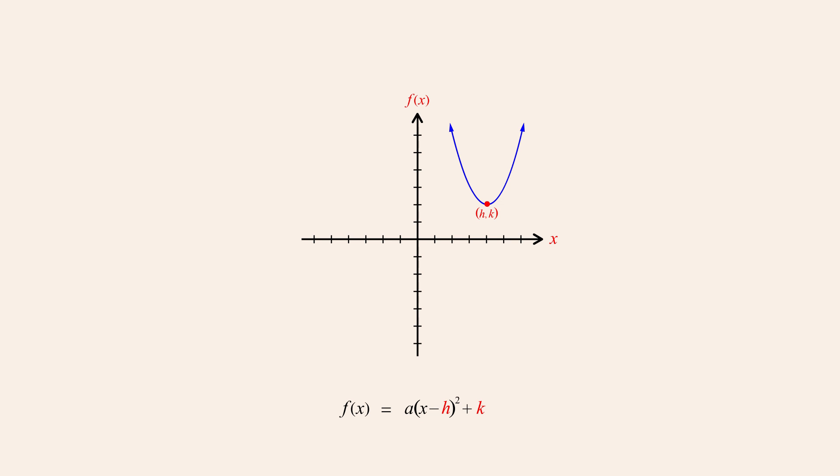For example, the horizontal and vertical coordinates of this parabola's vertex are 4 and 2. This makes it much easier to sketch the graph of a quadratic function written in vertex form, since once the direction the parabola opens and the position of its vertex are known, parabolas have the same basic shape. The only difference, determined by the magnitude of a, is that the parabola may be wider or narrower.